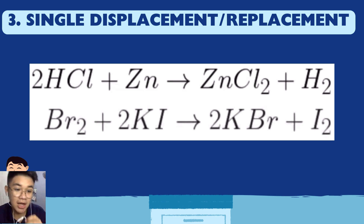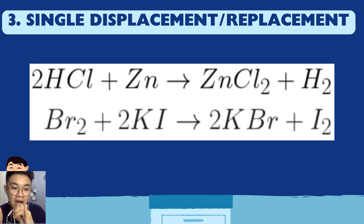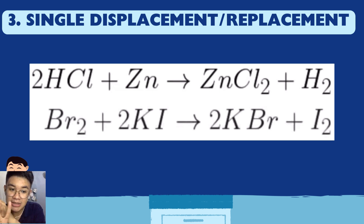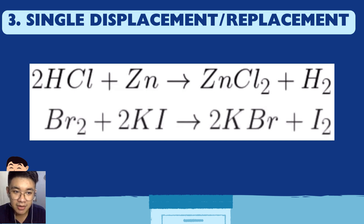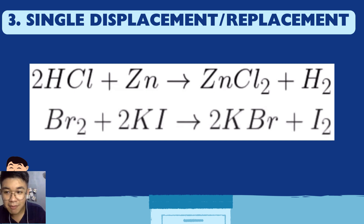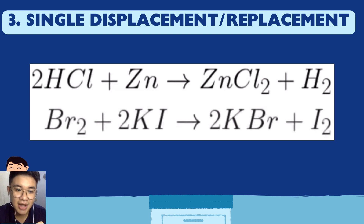An analogy: imagine a couple where someone new comes in and replaces one person in the relationship — that's how single replacement works. The new element takes the place of one element in the compound.